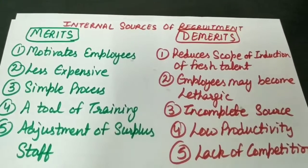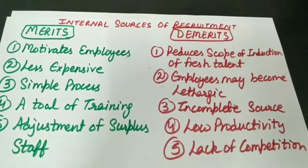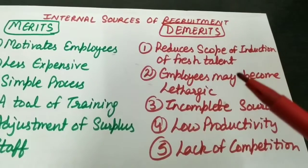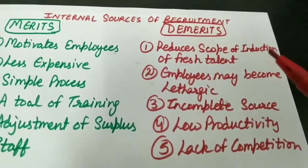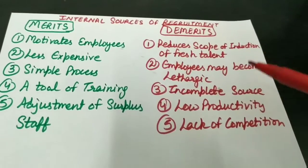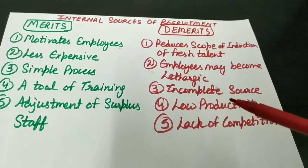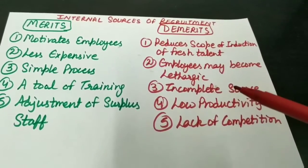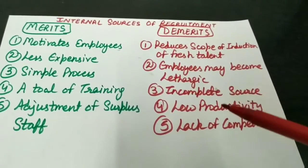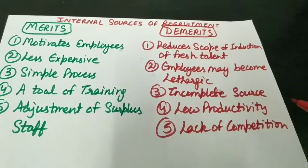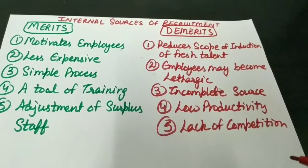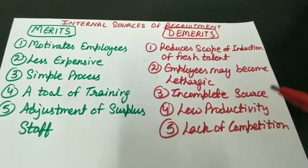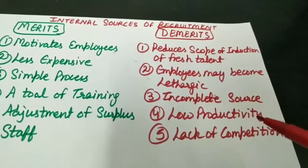Now let us see the demerits of internal sources of recruitment. The first demerit is it reduces the scope of induction of fresh talent. Jab koi enterprise vacant job positions ko fill karti hai through internal promotions, toh jo scope hai for induction of fresh talent, that is reduced. Kyunki jo bahar ke employees hain, they don't enter the organization, toh organization ke paas limited choice hoti hai. That is why this is one of the demerits of internal sources of recruitment.